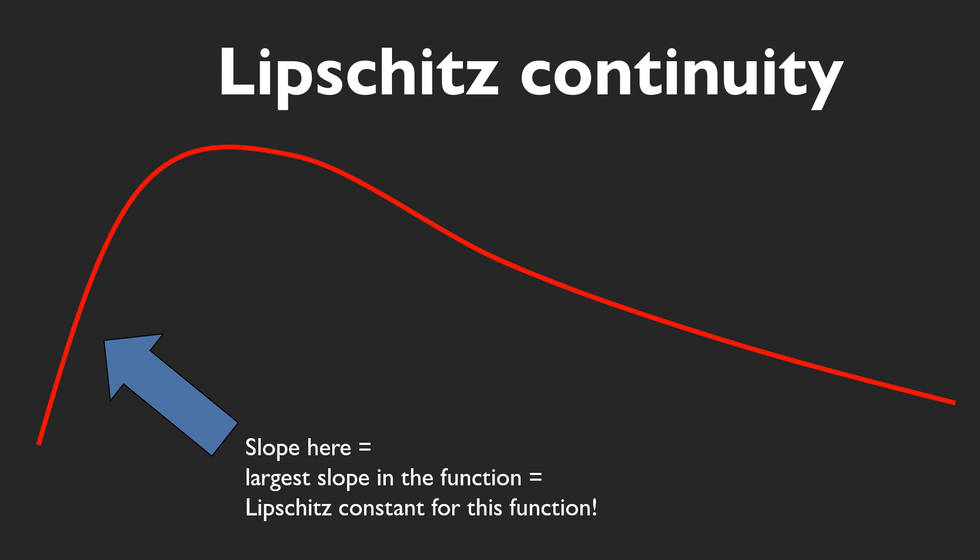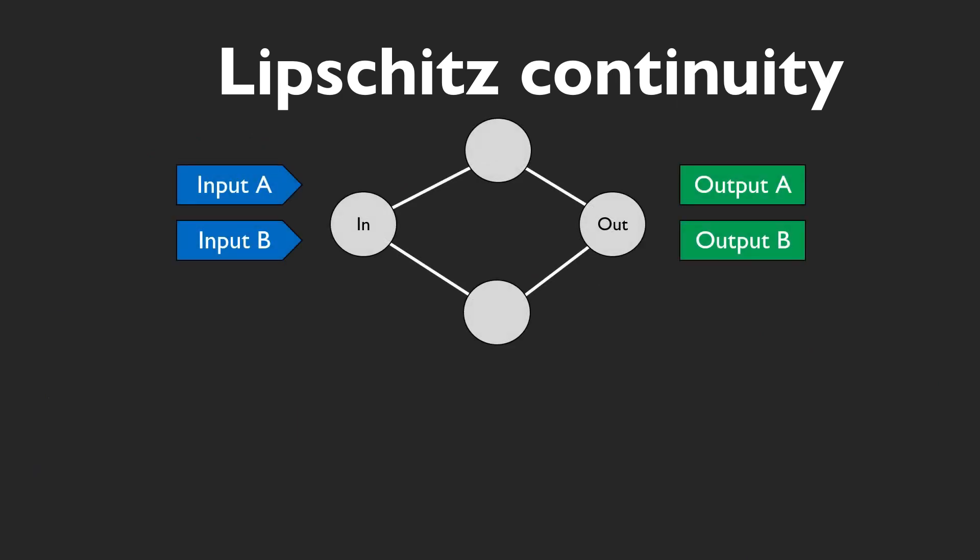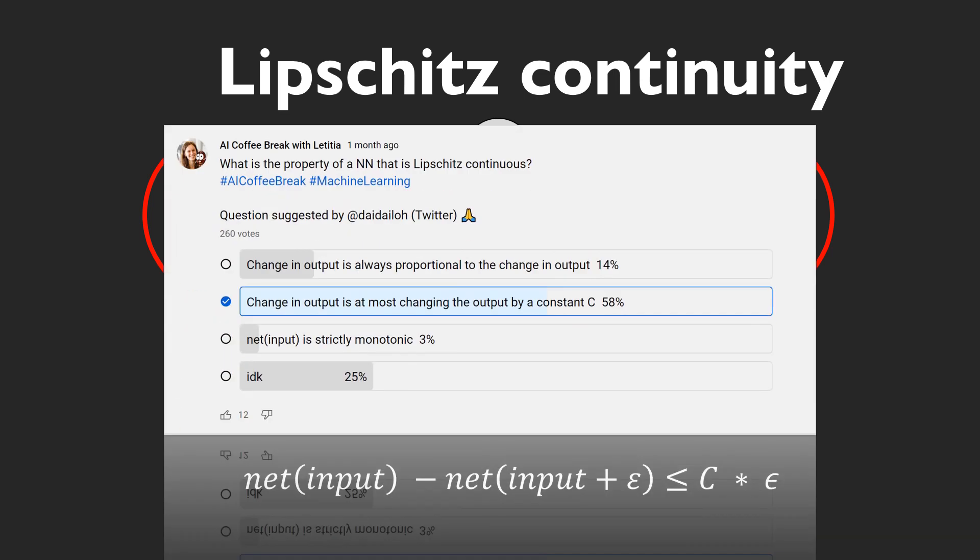As our networks are also just piecewise linear functions, we can also compute the Lipschitz constant for them. Discretely spoken, this means that for any two samples of the input, their output distance relative to the input distance should at most be that Lipschitz constant. Meaning, for a network that is Lipschitz continuous, when we fiddle around with one single input, the output change occurring has some upper bound. And that is already the answer to this question.